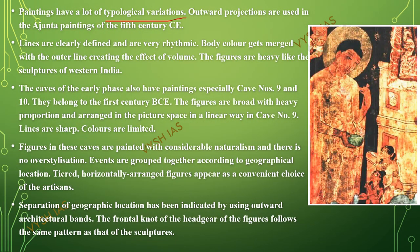The paintings have a lot of typological variation, and outward projection is found in the 5th century CE paintings. The lines are clearly defined and very rhythmic, and the figures are heavy, just like the sculptures of western India. The paintings of the early phase belonging to the 1st century BCE have figures that are broad with heavy proportions and are arranged in the picture space in a linear way. This linear arrangement contrasts with the effect of volume found in the later common era paintings.